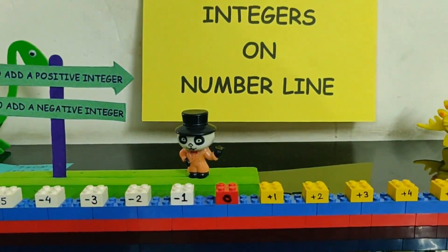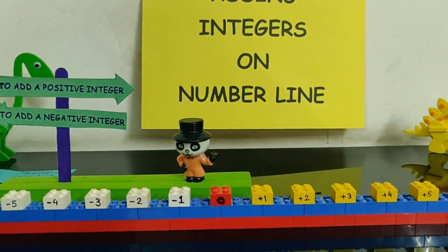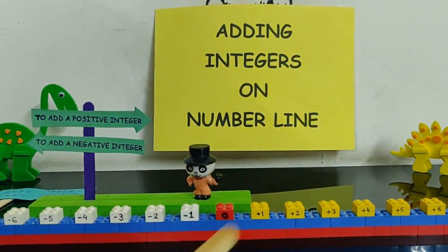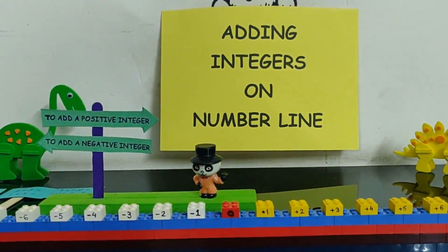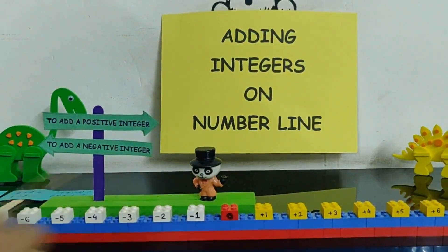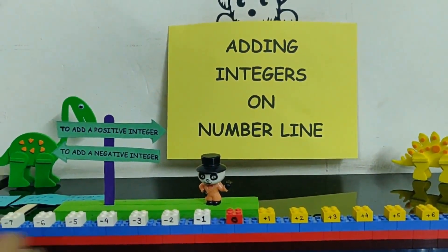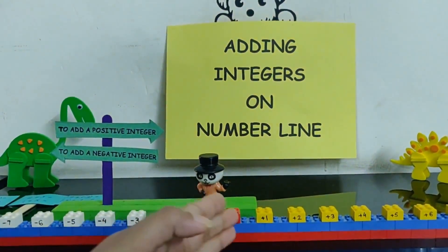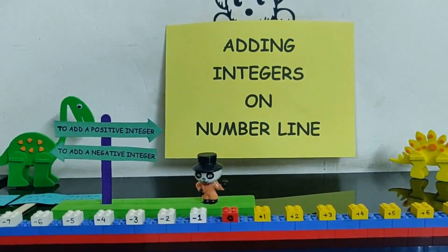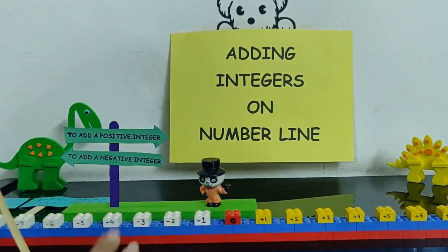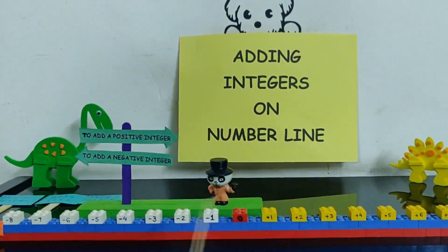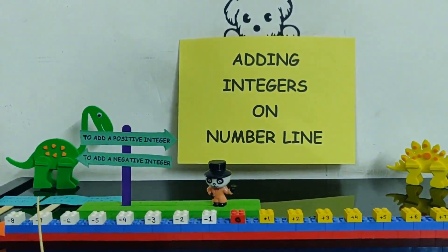Now when we are learning any concept, we should always try to take very small values. It becomes easier for us to understand the concept. That is why we have taken only smaller values till plus 8 and minus 8, because that is sufficient for us to understand the concept.